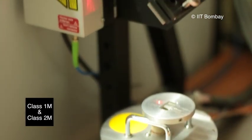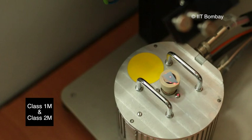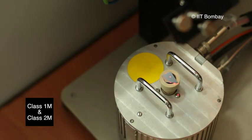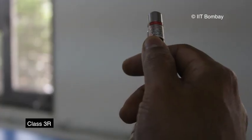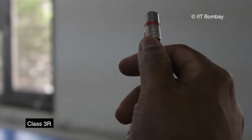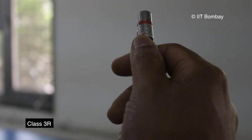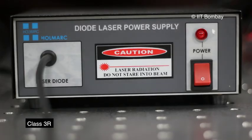Class 1M and Class 2M lasers can be a hazard if viewed through telescopic optics like binoculars. For Class 3R lasers, the risk of injury in most cases is relatively low, but direct viewing of the beam must be avoided.